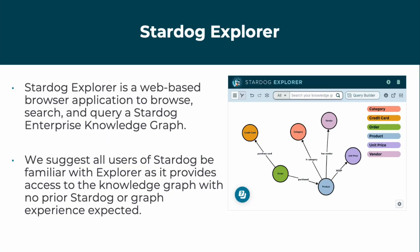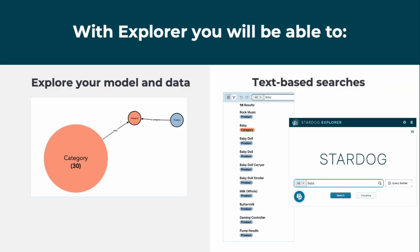Stardog Explorer is your tool to browse, search, and query a Stardog Enterprise Knowledge Graph. We suggest all users of Stardog be familiar with Explorer as it provides access to the knowledge graph without prior Stardog or graph experience. Explorer can accelerate creation of the knowledge graph for validating data, aid in showcasing semantic models in Stardog, and enable citizen data users to uncover data insights all on their own.